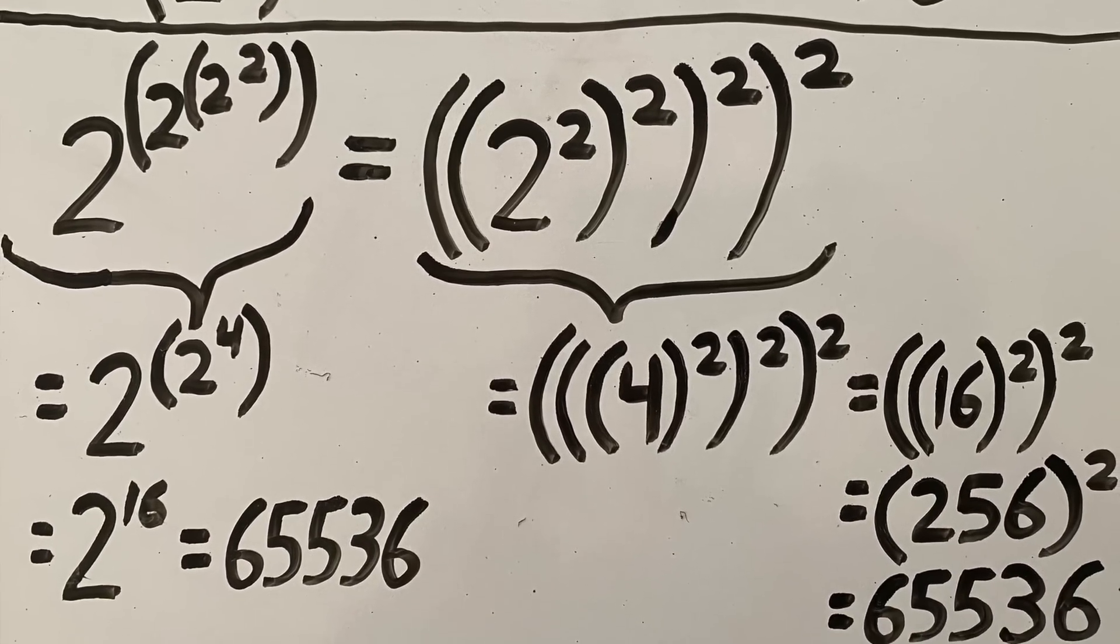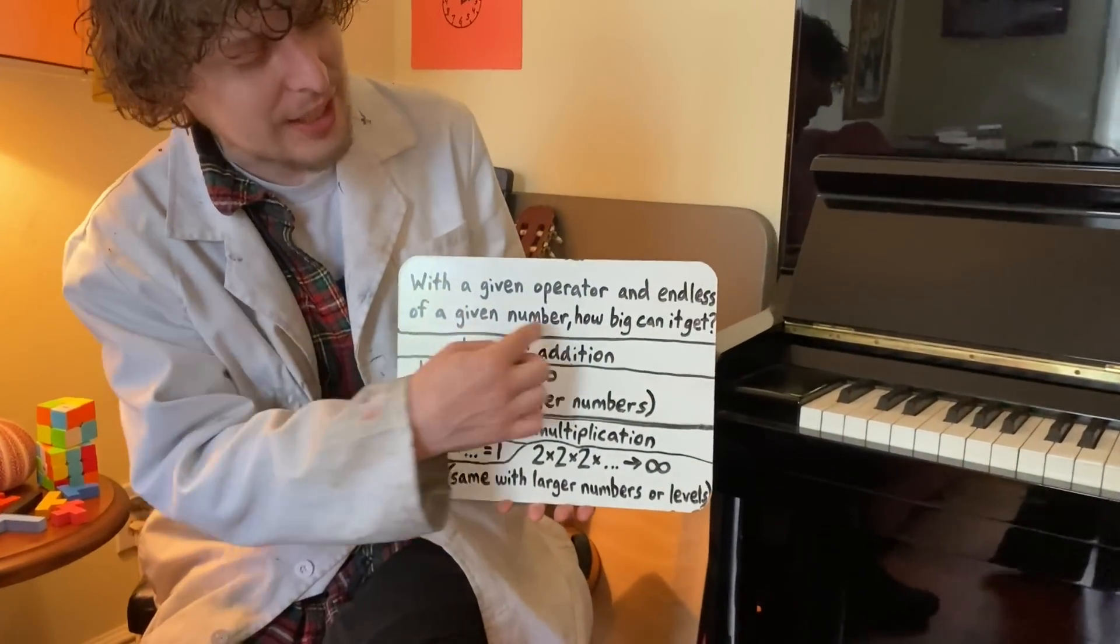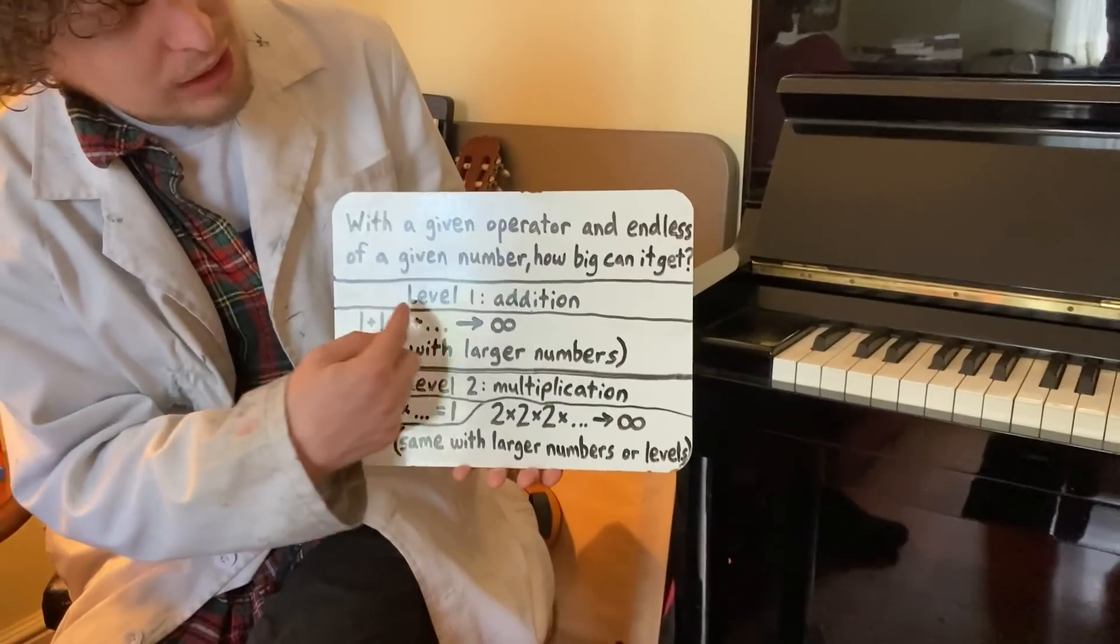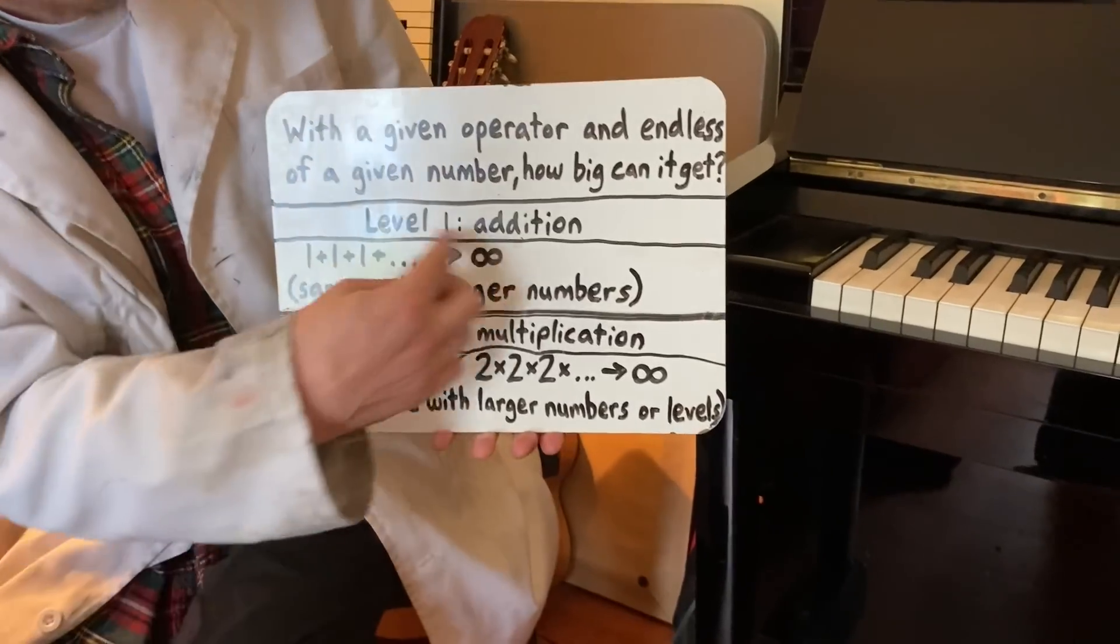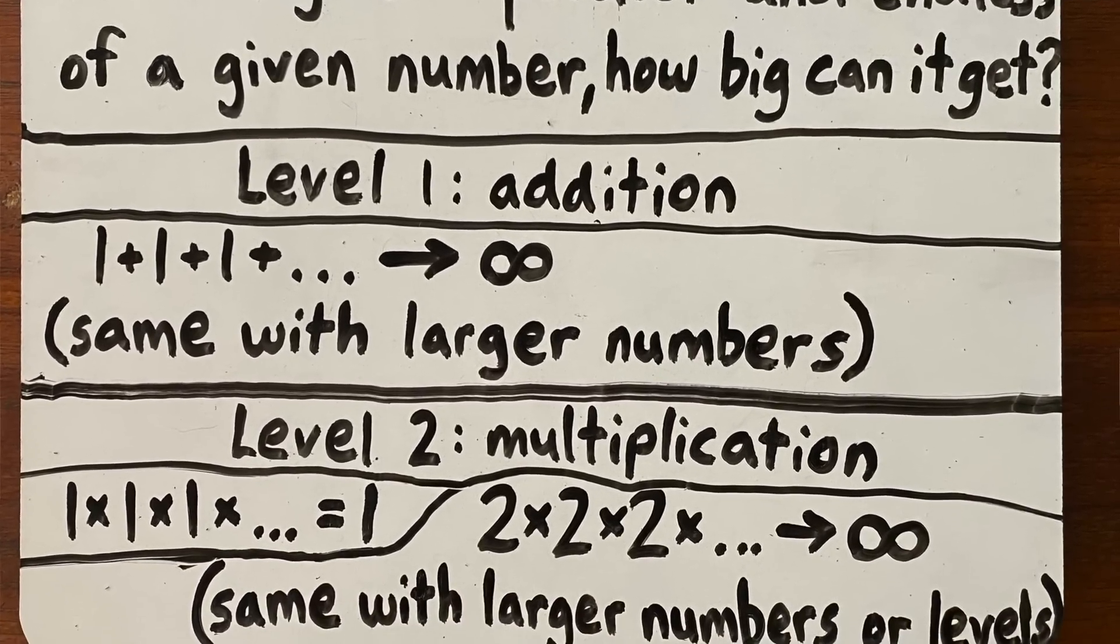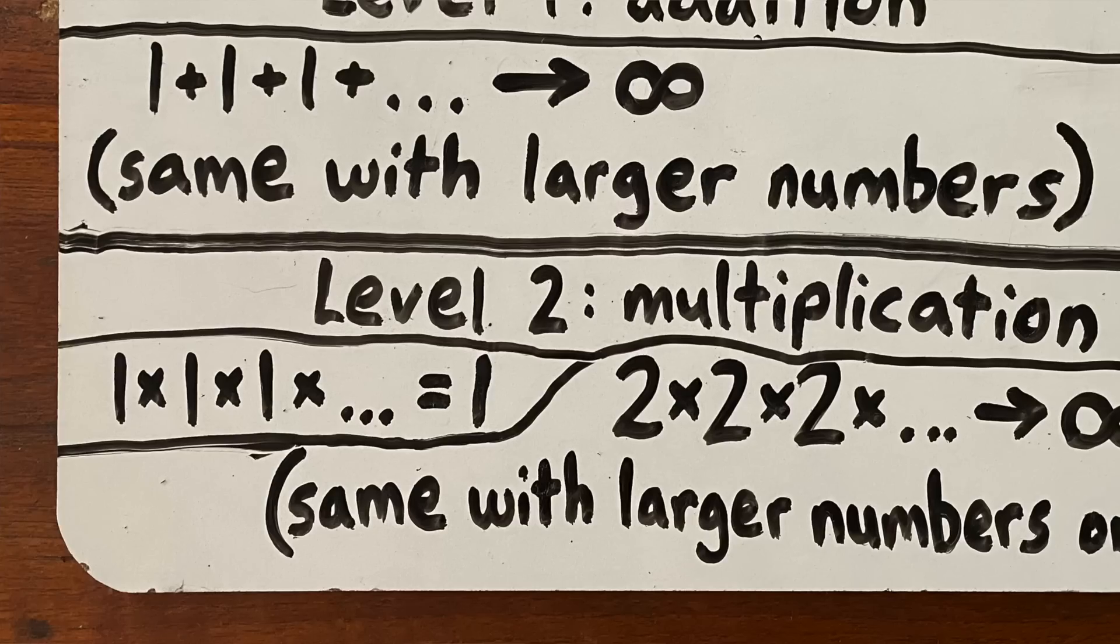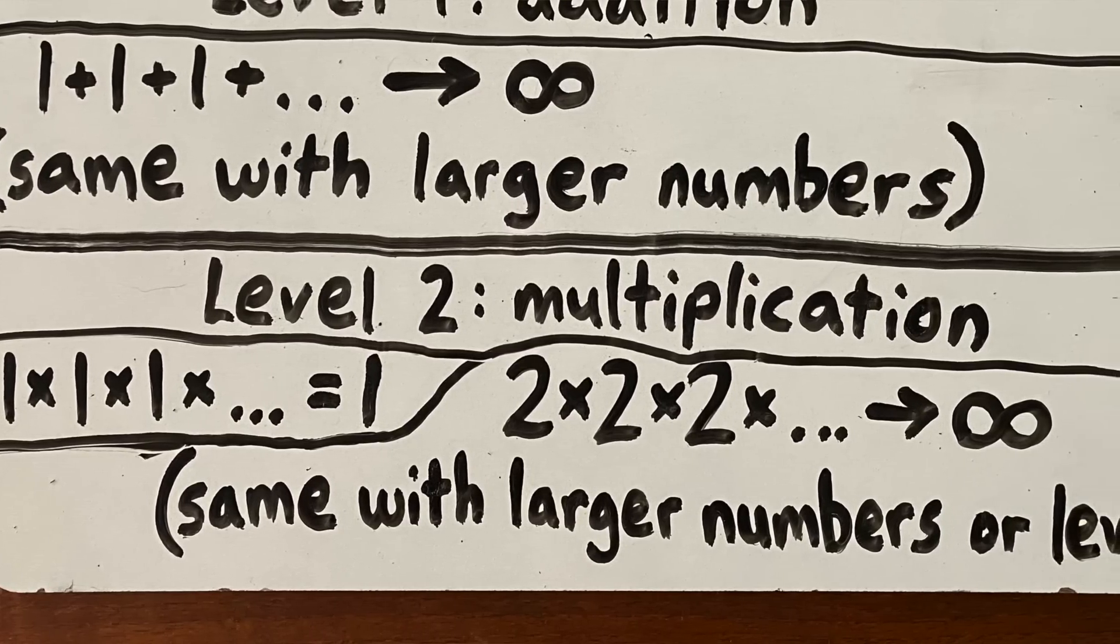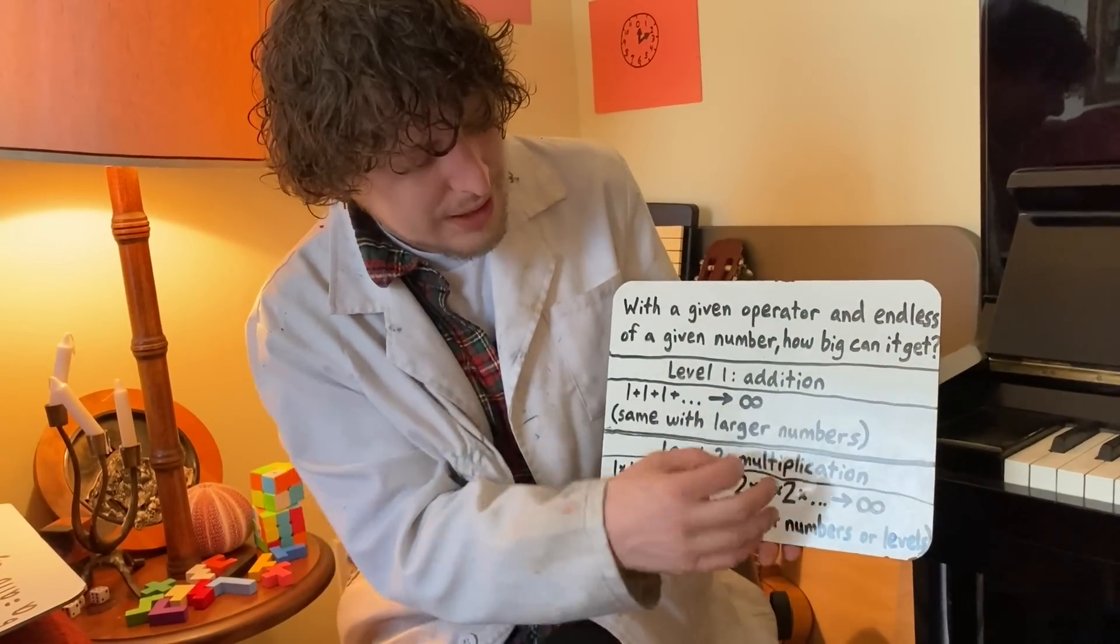Now to see how powerful these different operators can be, let's play some games with numbers. Our first game will be with a given operator and endless of some number, how big will it get? On level one addition, even the number one added to itself infinitely many times would approach infinity, same with larger numbers. But on level two multiplication, multiplying one by itself no matter how many times you do it, it stays stuck at one. It takes two or larger in multiplication or a larger level to approach infinity.